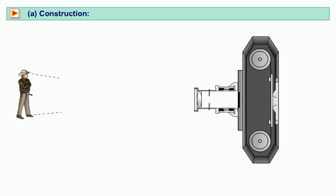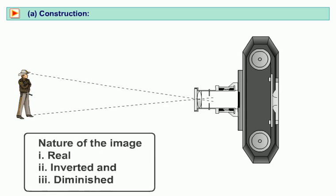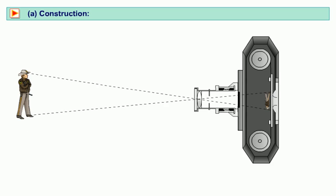The light coming from an object enters the camera through the lens and its image is formed on the film which is real, inverted and diminished. The distance between the lens and the film is adjusted until a sharp image of the object is formed on the film.